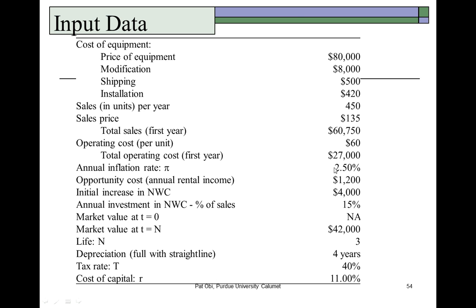The annual inflation rate is 2.5%, so we're going to grow the sales price per unit and the operating cost per unit at this rate from year to year. The opportunity cost associated with this investment is rental income foregone of $1,200 per year. There will be an increase in net working capital in the form of raw materials inventory of $4,000 initially, and in subsequent years the buildup of inventories will equal 15% of projected sales.